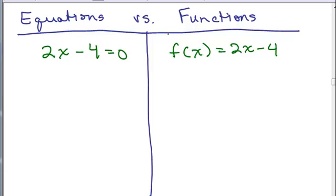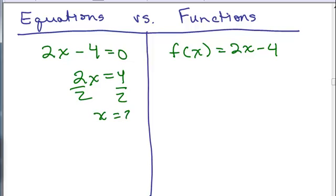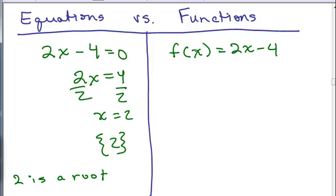Let's look at equations versus functions. On the left I have an equation with one variable, so we can solve it: add 4 to both sides to get 2X equals 4, divide by 2, and our solution is 2. We'd say 2 is a root — a root of the equation is the same as the solution. On the right we have a function. It doesn't make sense to say 'solve' a function. A function is a rule with inputs X (the domain) and outputs (the range). Functions are very different from equations.